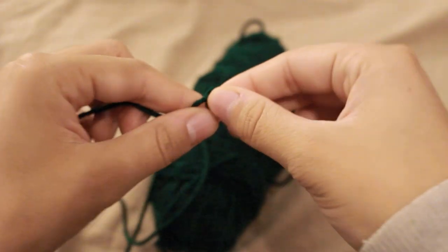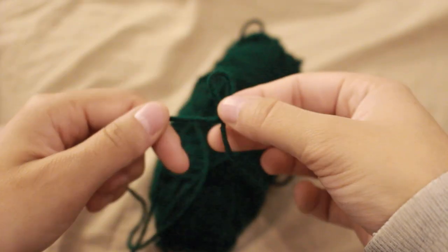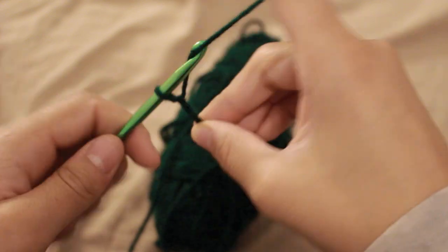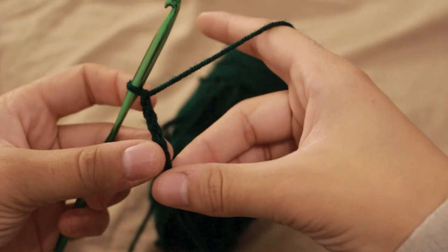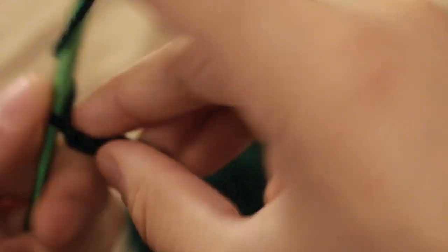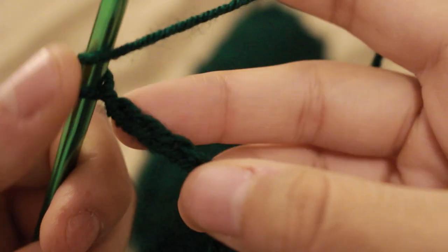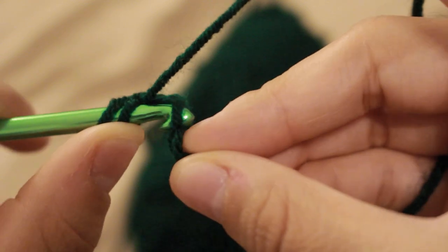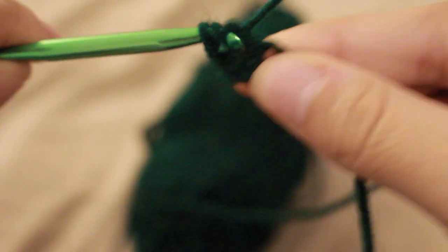To start off, we're going to do a slipknot, and then to that, we're going to add five chain stitches. This will be our foundation chain. A half double crochet is achieved by yarning over, sticking your hook into this first stitch, then pulling up a loop, yarning over, and then pulling all the way through.